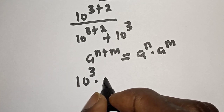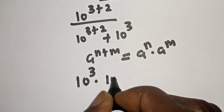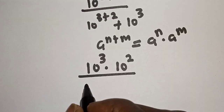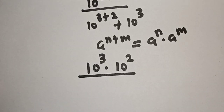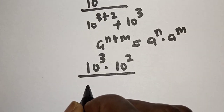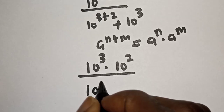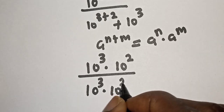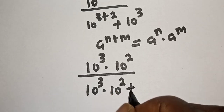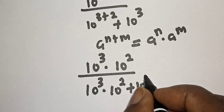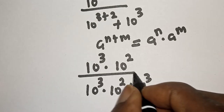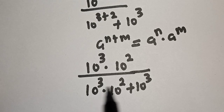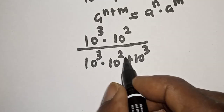Divided by 10 raised to power 3 multiplied by 10 raised to power 2, plus 10 raised to power 3. From the denominator, you can see that 10 raised to power 3 is common — let's bring it out.